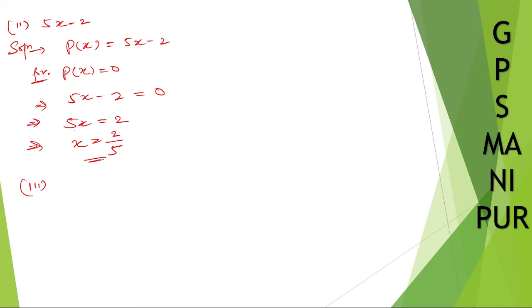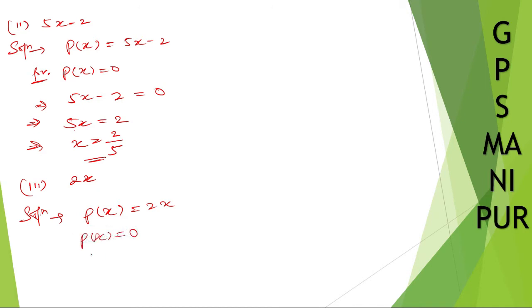So 2/5 is the zero of that polynomial. Now roman number three: p(x) = 2x. Setting p(x) = 0, we get 2x = 0, so x = 0/2 = 0.